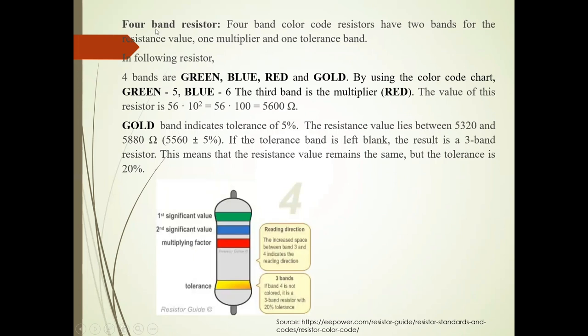Now we will see 4 band resistor. There are 4 bands. 4 colors are there on the resistance resistor body. They are printed. Now 4 bands, see this resistor. The green band, blue band, red color band and gold color band.